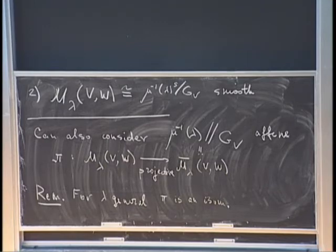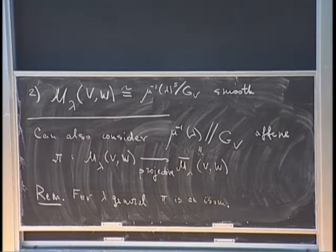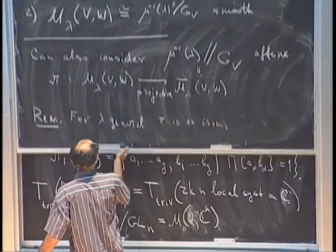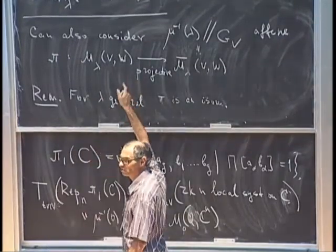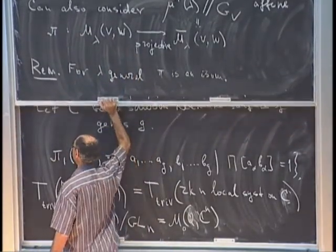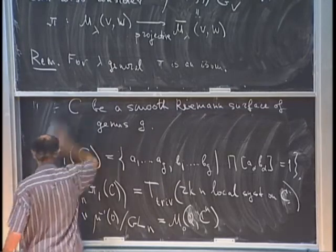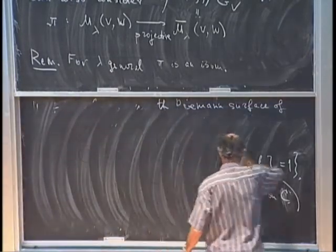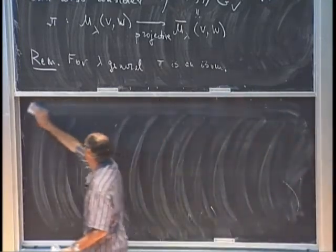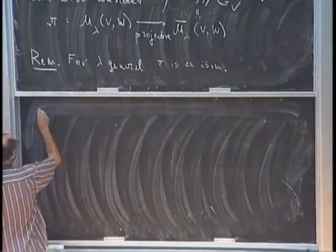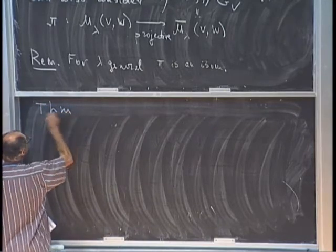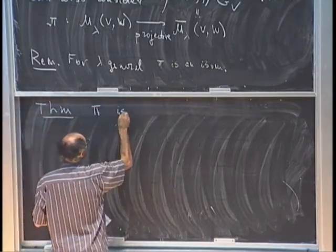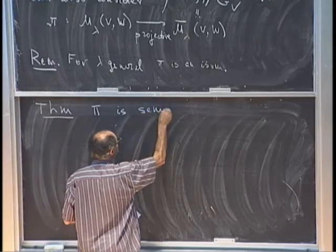I have five minutes. I really wanted to prove one theorem: the map pi is automatically semi-small in the sense of Goresky-MacPherson. This is a non-trivial statement.